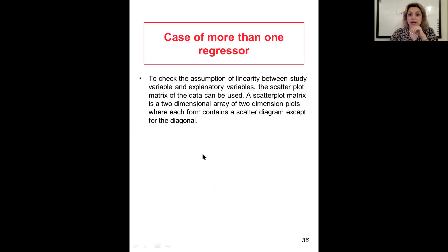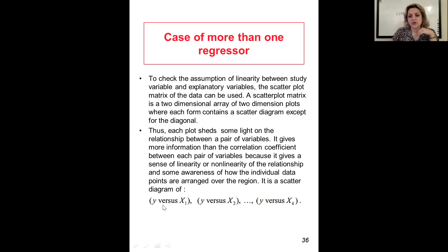In the case of more than one regressor, to check the assumption of linearity between the study variable and the regressors, the scatter plot matrix of the data can be used. The scatter plot matrix is a two-dimensional array of two-dimension plots where each form contains a scatter diagram except for the diagonal. You have y versus x1, y versus x2, y versus xk.